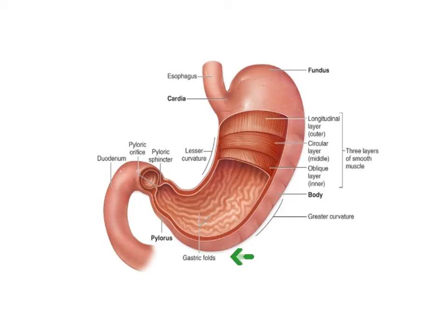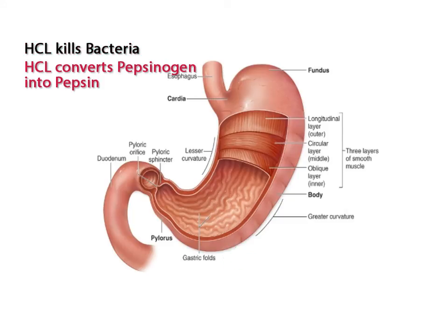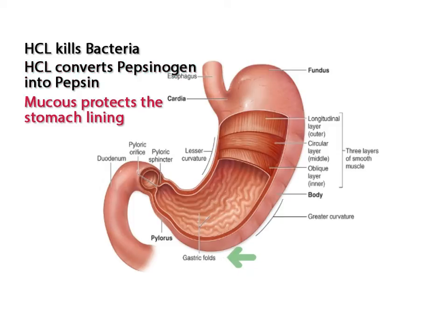The muscular walls of the stomach are folded, which allows the stomach to expand as food enters. The tissues that line the stomach wall contain gastric glands that secrete hydrochloric acid, pepsinogen, and mucus. The hydrochloric acid kills bacteria in the food you have consumed and converts pepsinogen into pepsin, which is the enzyme that digests proteins. The mucus helps to protect the walls of the stomach from the acidic gastric juices.